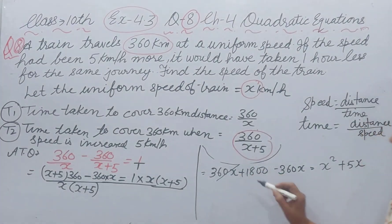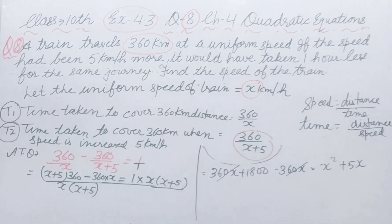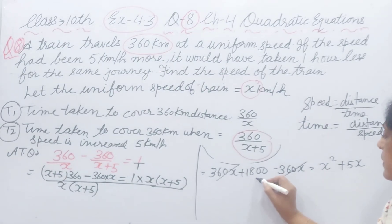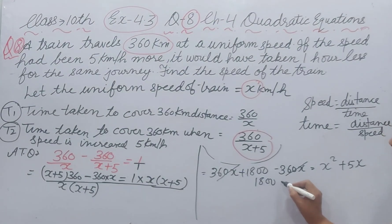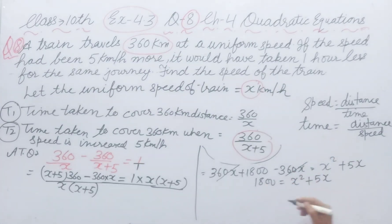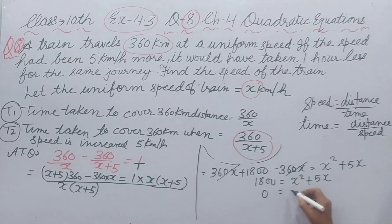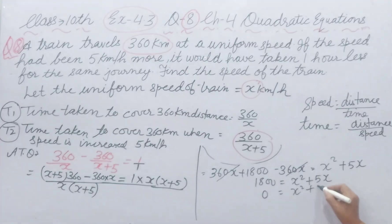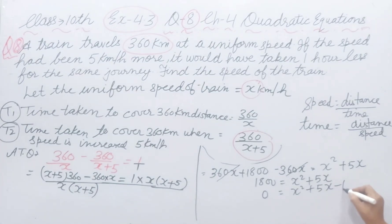Now, 360x positive, 360x negative cancel. 1800 equal to x square plus 5x. This 1800 coming right hand side and sign will be changed minus 1800.